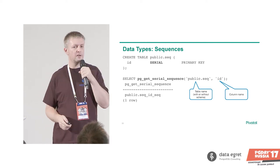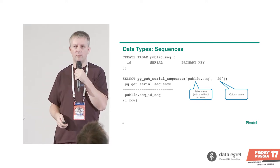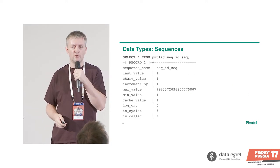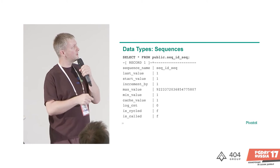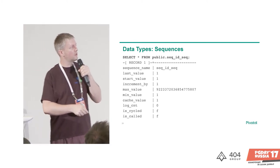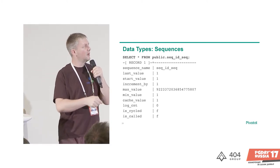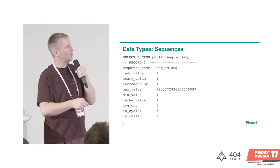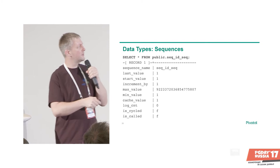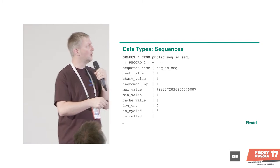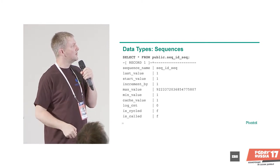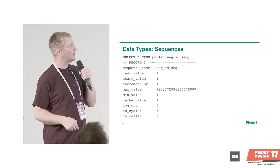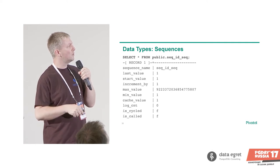A sequence is itself a table in Postgres — you can SELECT from it. SELECT * FROM my_sequence_name gives you all the details: the current value, the name, the increment, the step, whether it's counting forward or backward, and whether it wraps around.